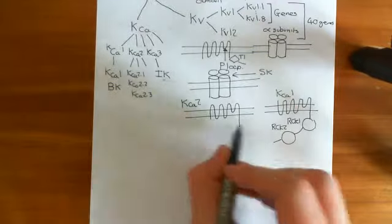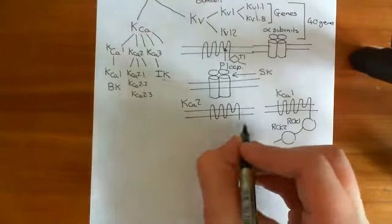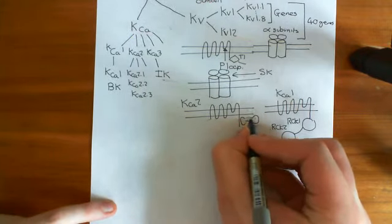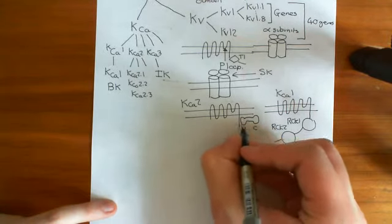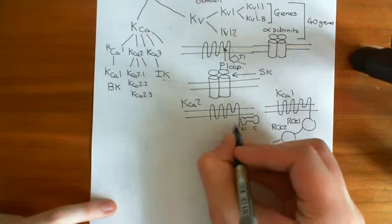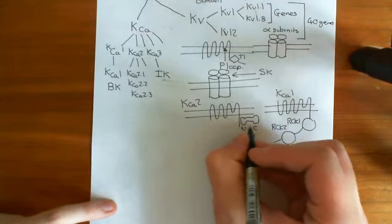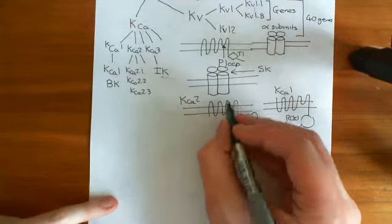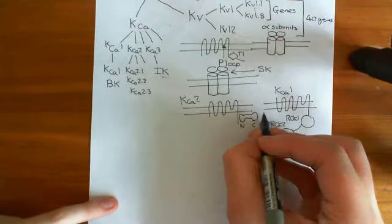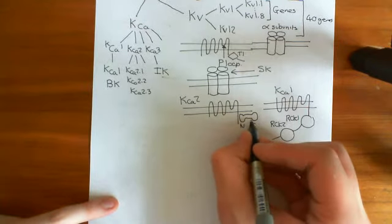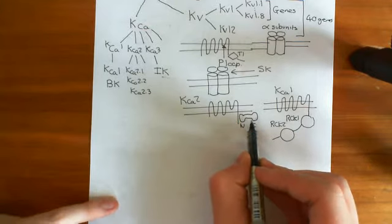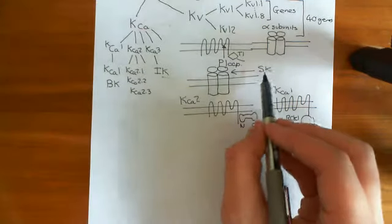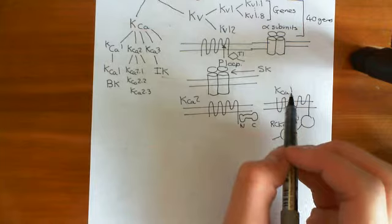So how do these KCA2 polypeptides sense calcium? They have calmodulin constitutively bound to them. Calmodulin has a dumbbell shape with an N-lobe and a C-lobe, and it is constitutively bound to the cytoplasmic carboxyl terminus of the polypeptide. It senses calcium and then induces a conformational change to open the channel. This can be shown because if you express a mutant calmodulin with much lower affinity for calcium, the effect of these SK channels becomes much lower.